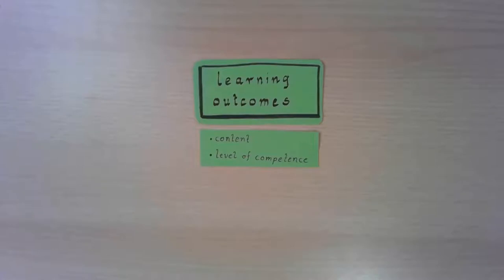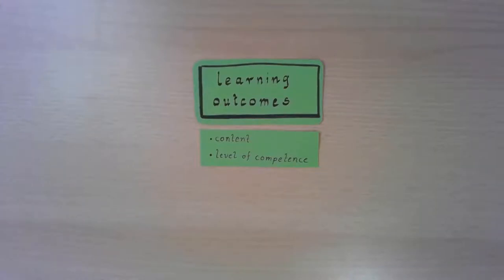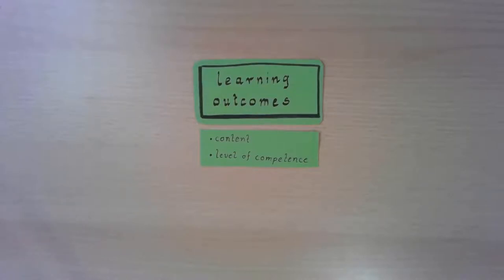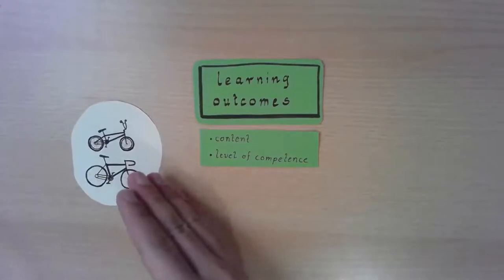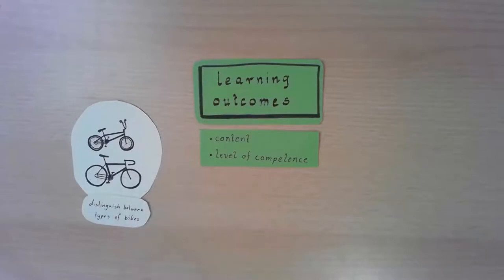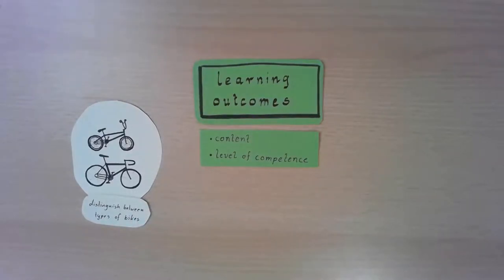Let me give you an example. Imagine you have a course about bicycles. You could give an introductory lecture and talk about the history of the bicycle, who invented it, and what influence bicycles have on traffic, health, and the environment. Or you might want to go beyond that and give your students some competencies — for example, being able to distinguish between types of bikes: BMX bikes, racing bikes, street bikes, mountain bikes. Students should know the features of each type.